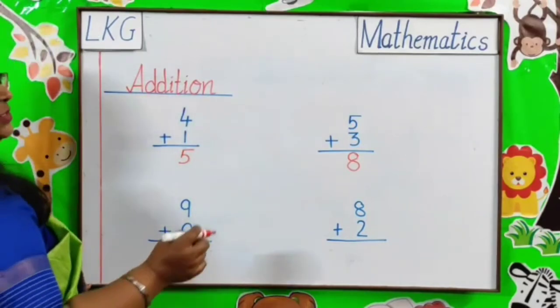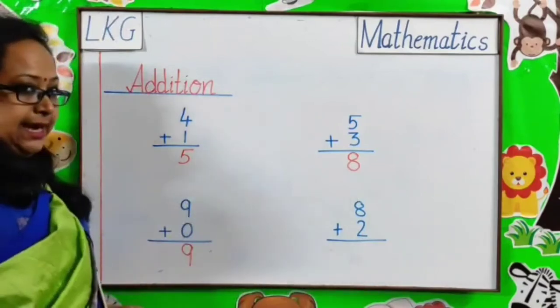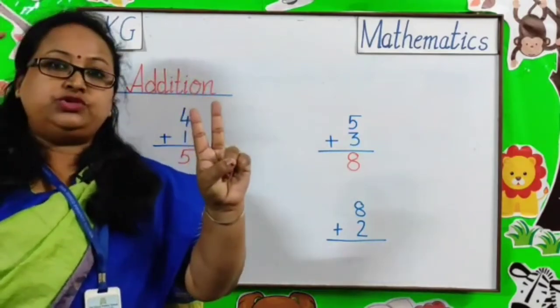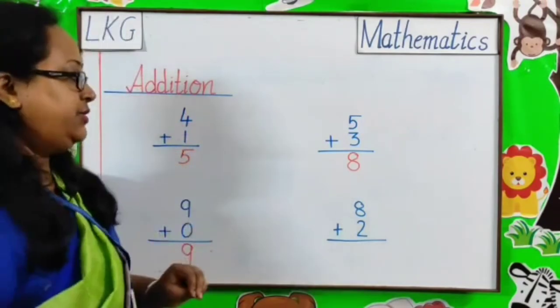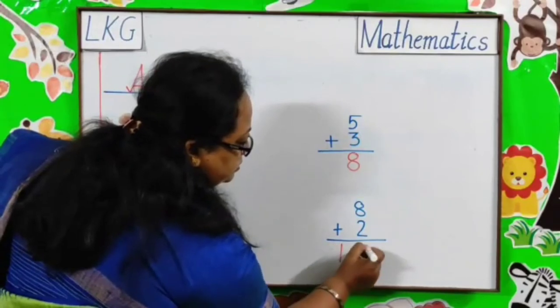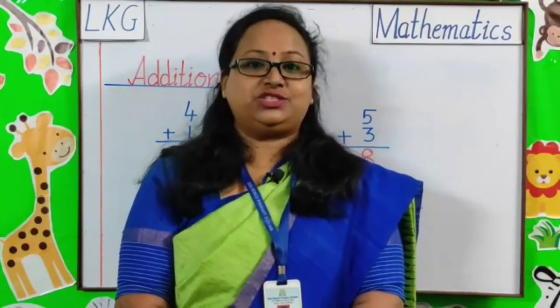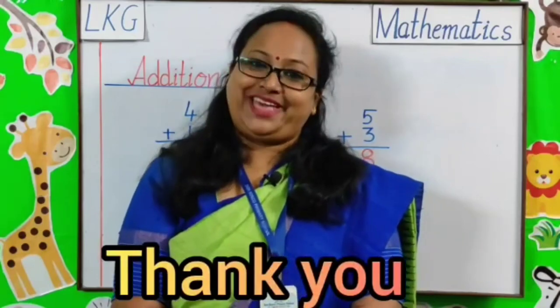And, the last question is 8 plus 2. 8 plus 2. So, after 8, 9, 10. Answer is 10. How we will write? 1, 0, 10. Dear parents, worksheet related to the topic will be uploaded on the school website. Kindly go through it and help your children to practice at home. Thank you.